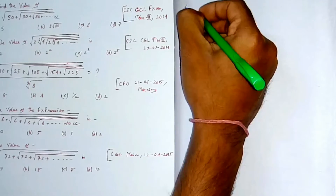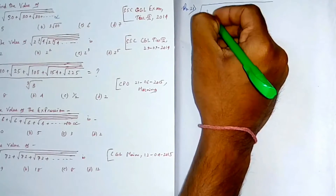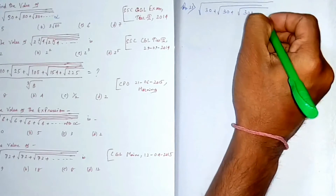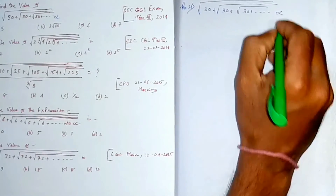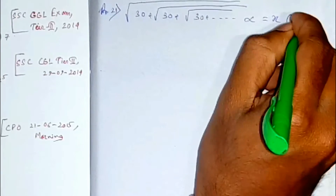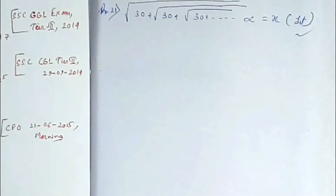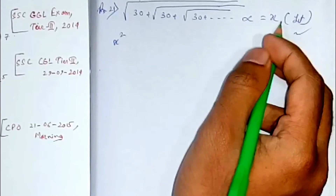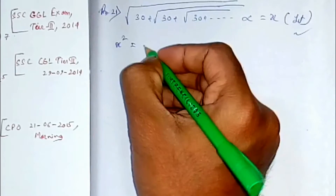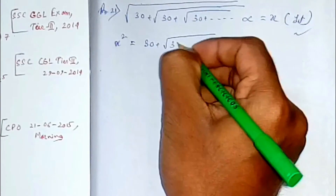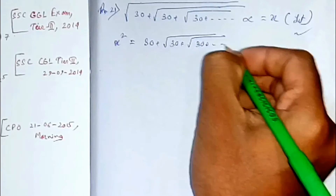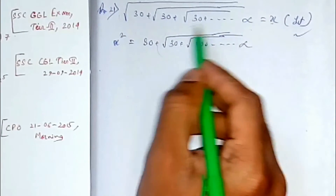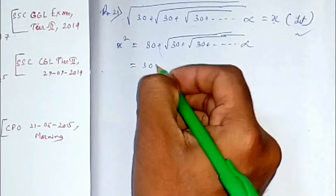Let me copy the question: it is √(30+√(30+...)) continuing to infinity. The approach is to take this whole expression as x. By squaring both sides: x² = 30 + √(30+√(30+...)), and since we defined the whole nested radical as x, we get x² = 30 + x.